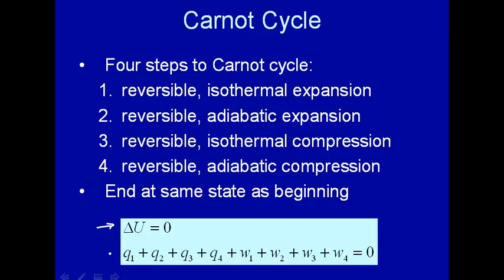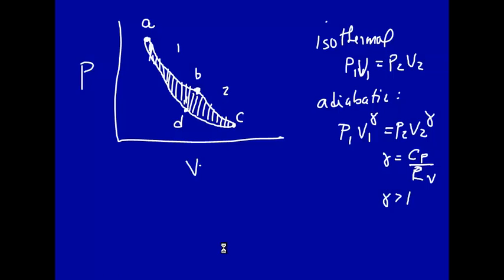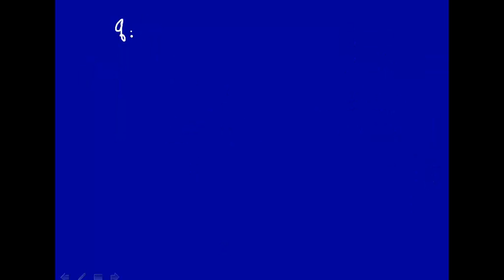So let's look at this thermodynamically. Since steps two and four are adiabatic, that means that Q2 and Q4, there's no heat transferred in the second and fourth steps. So that the total Q total, the total heat transferred, is the heat transferred in the first step, isothermal, plus the heat transferred in the third step, isothermal. And the second and fourth are adiabatic.